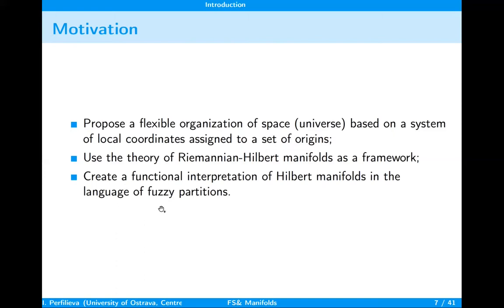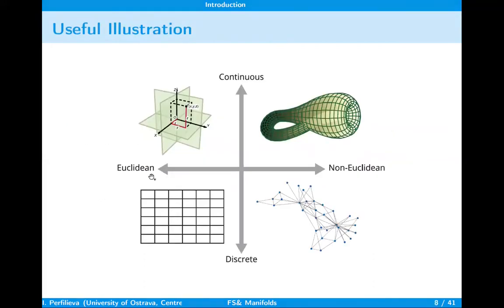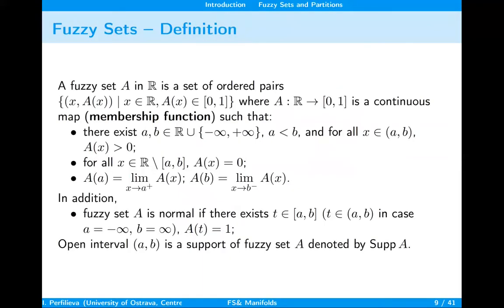This is a useful illustration of how we pass from one space organization connected with a fixed Euclidean origin to a local point of view. If the space is connected with the so-called Klein bottle, its description is mostly non-Euclidean. Here you see the skeleton of the space structure connected with the surface we put in this example.